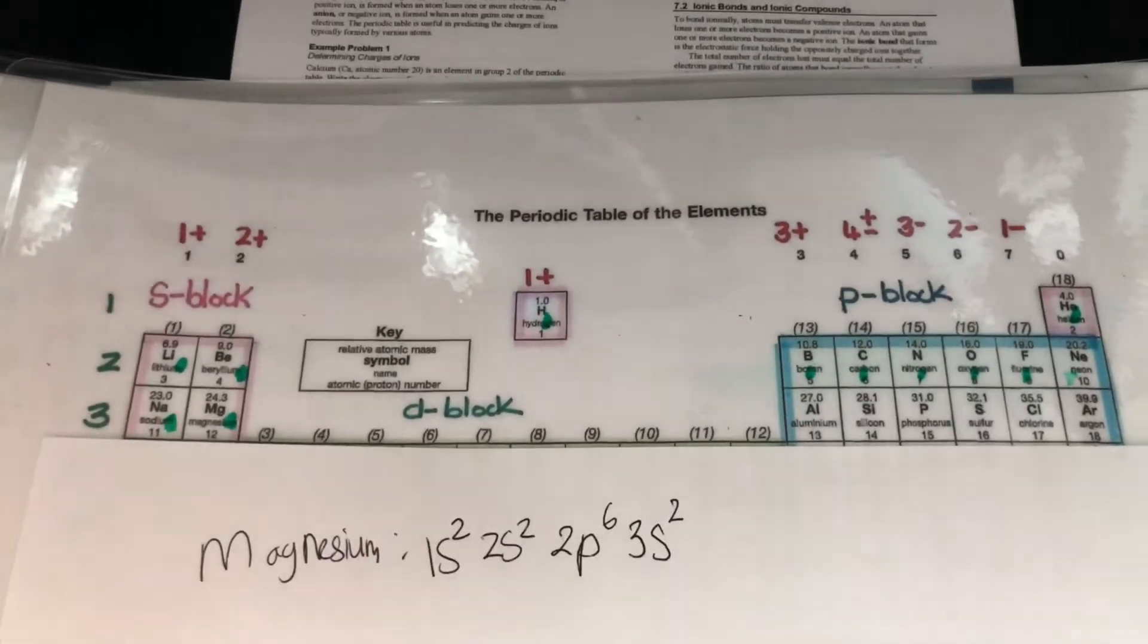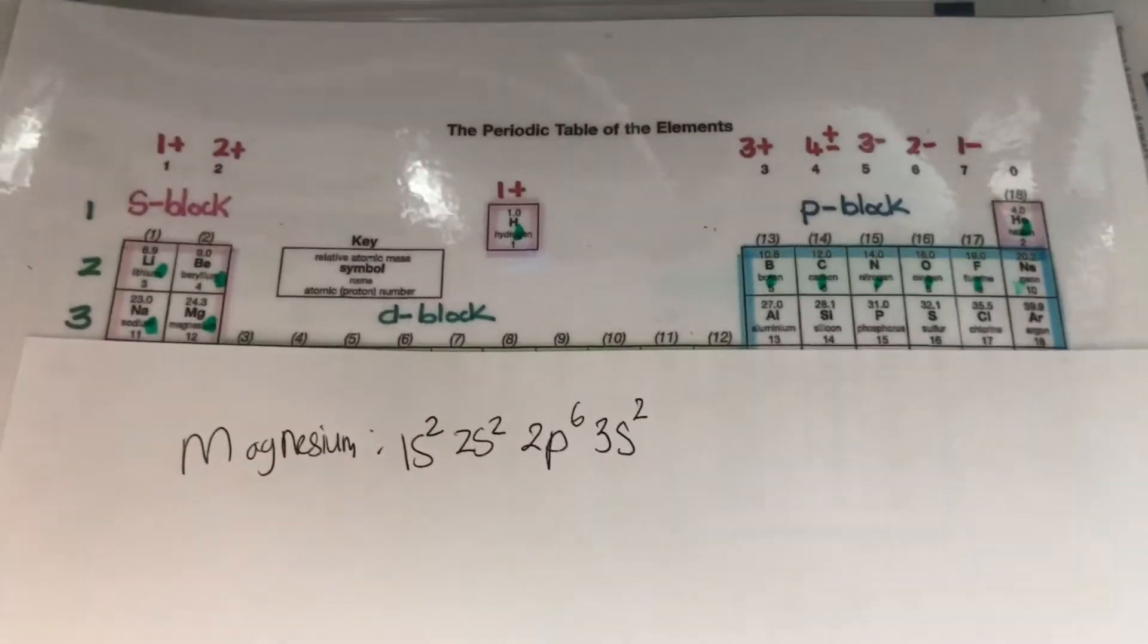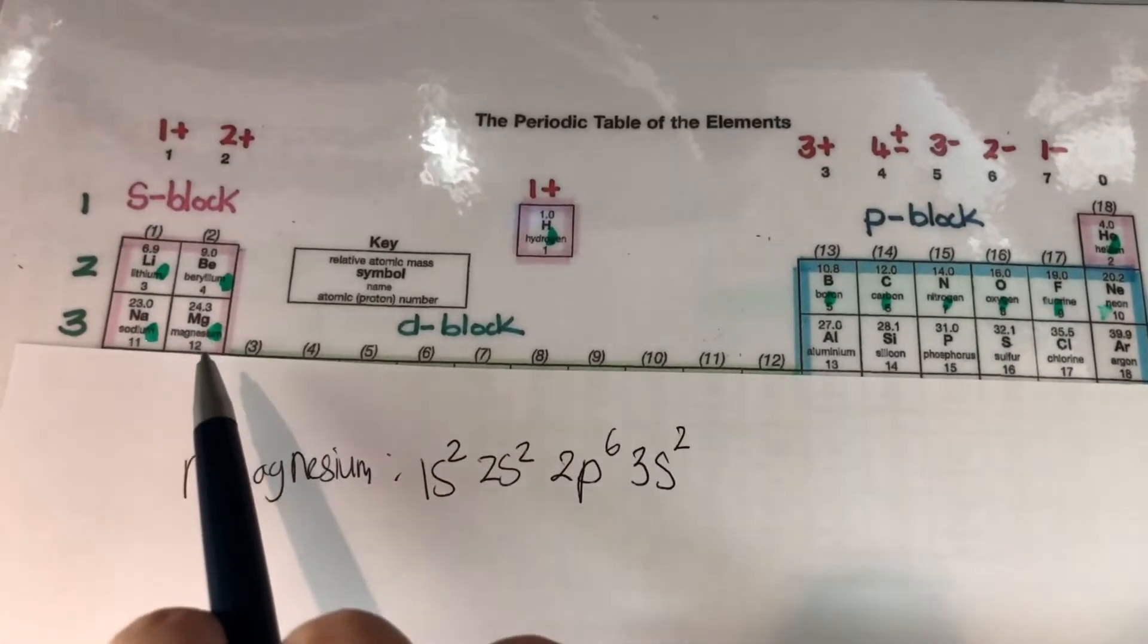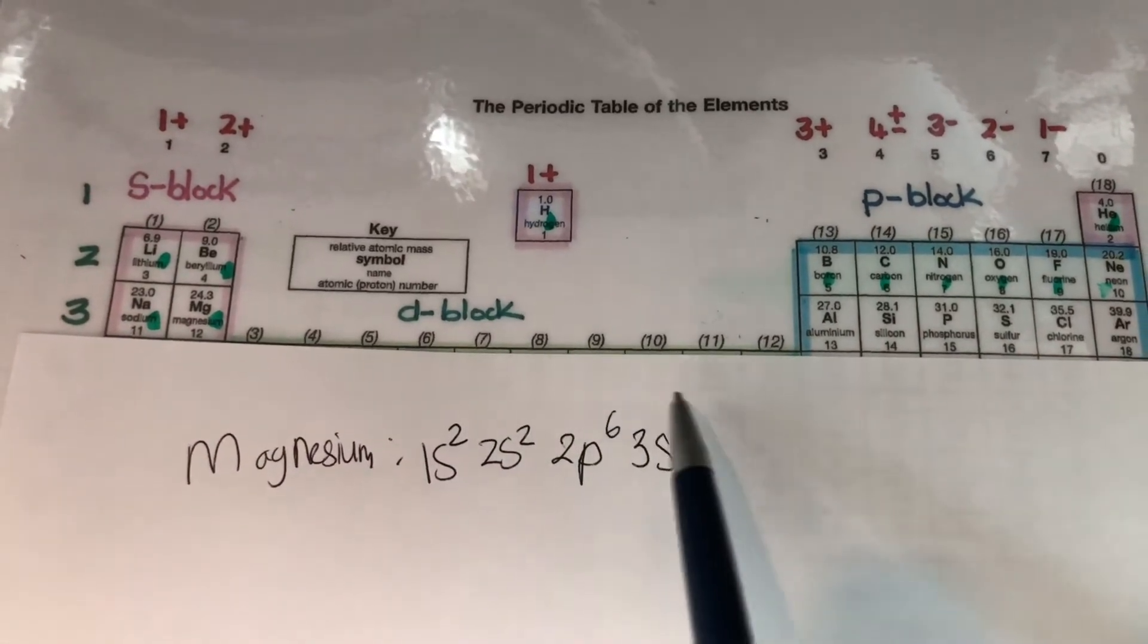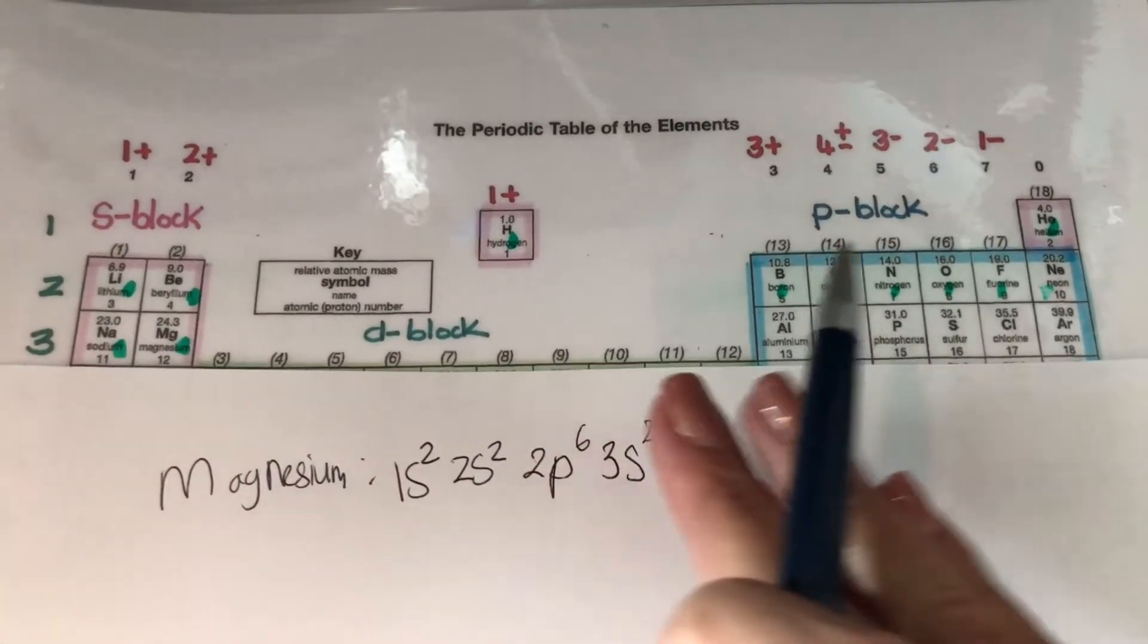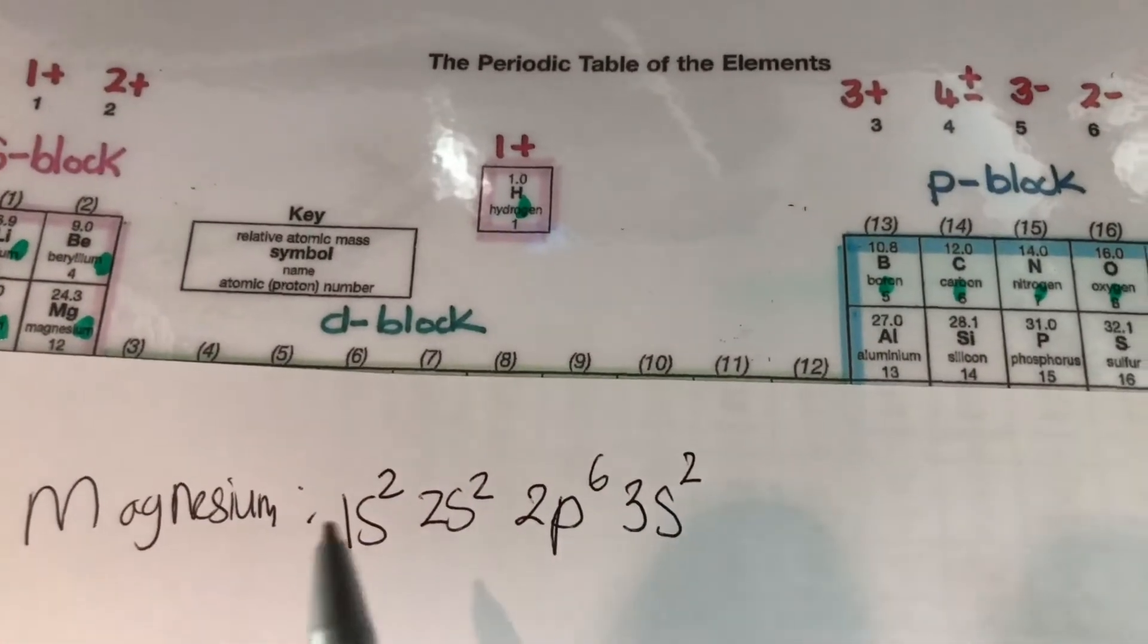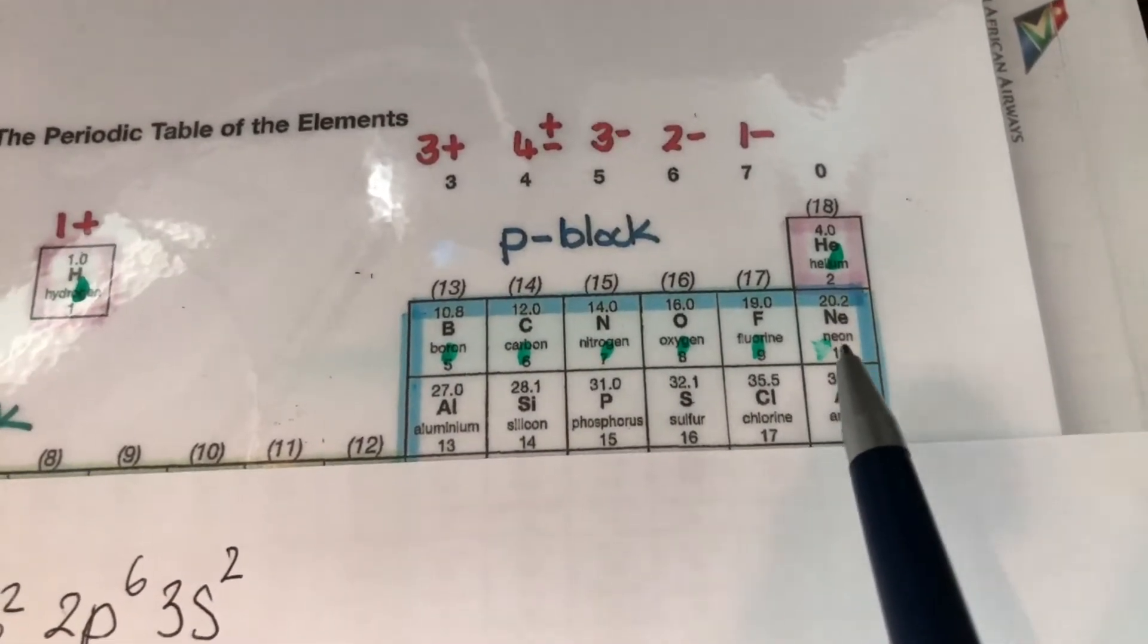Now I can also write that as an abbreviated electron configuration. And the way that I can do that is instead of writing all of this 1S2, 2S2, 2P6, instead of writing all of this, this electron configuration up to there represents this noble gas over here, neon with 10 electrons. See, so the first 10 electrons, that one over there belongs to neon. Up to there I will get to neon.